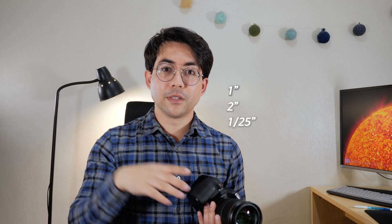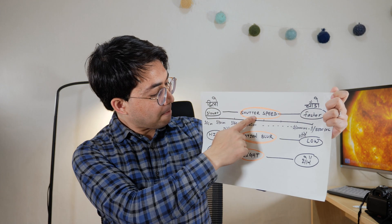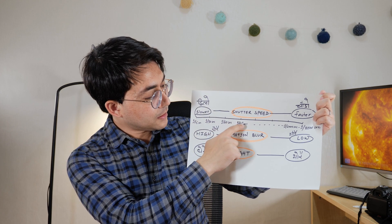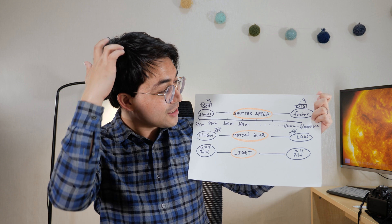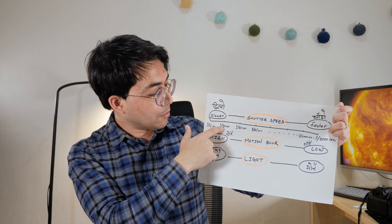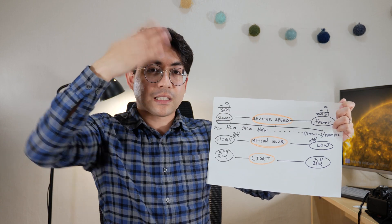The shutter speed is measured in fractions of a second — 1 second, 2 seconds, 1/25, 1/30, 1/60, 1/125, 1/3000, 1/8000. Slower shutter speeds let in more light. If you have a moving subject, you need a faster shutter speed. Faster shutter speed freezes motion; slower shutter speed creates motion blur.